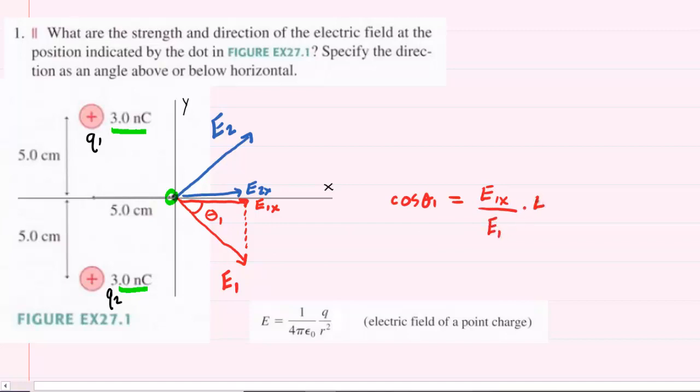We can multiply both sides of this equation by E1. The E1s would cancel, and we can see that the x-component of E1 is this expression right here. Now, we therefore need to come up with E1 and then the angle.